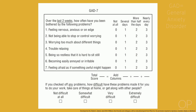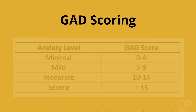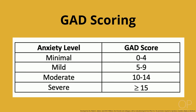You may have heard of the GAD-7, which is another well-researched scale but is only validated for children aged 13 and older. Scores of 0 to 4 suggest minimal anxiety, 5 to 9 suggest mild anxiety, 10 to 14 suggest moderate anxiety, and a score greater than 15 suggests severe anxiety.